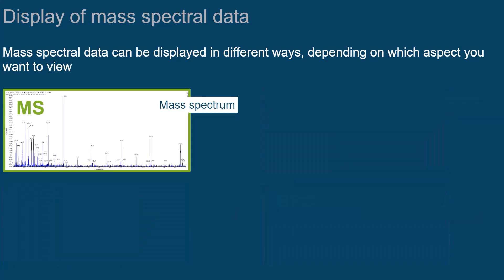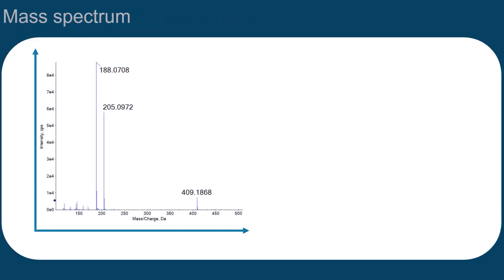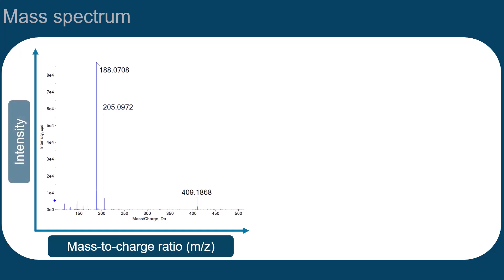Next, let's see what information you can get from mass spectra. A mass spectrum is a two-dimensional representation of the ion signals recorded by the detector. On the x-axis, you can see the mass-to-charge ratio, or m over z. On the y-axis, the signal intensity is displayed. One mass spectrum is the result of one recording event called scan in a mass spectrometer.